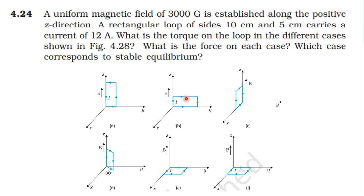In every case we find torque and force. Torque acts on a coil placed in a magnetic field: τ = m × B. Here is the formula. That is τ = nIA × B, where n is number of turns, I is current, A is area, B is magnetic field.